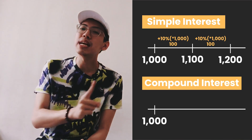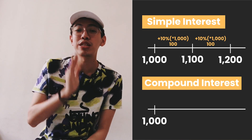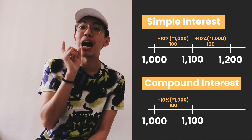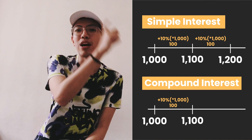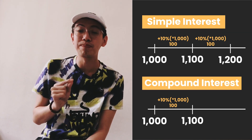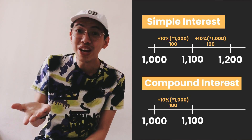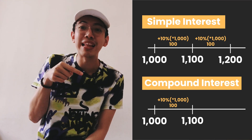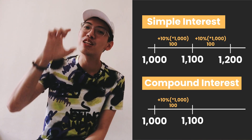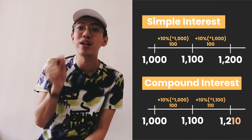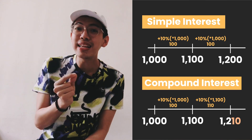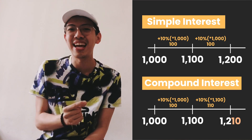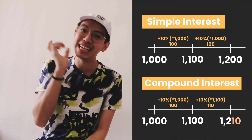For compound interest: starting with 1,000 rupiah at 10% per period, after one period you get interest of 10% × 1,000 = 100, so your balance is 1,100. In the second period, interest is calculated not from the original principal but from the previous balance of 1,100, so interest is 10% × 1,100 = 110. Your money after the second period is 1,100 + 110 = 1,210.